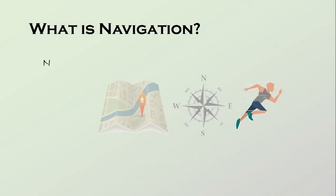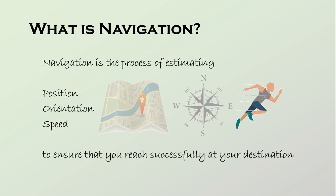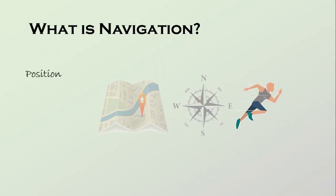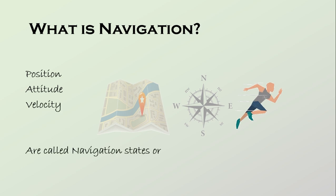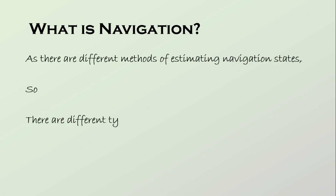Navigation is the process of estimating position, orientation, and speed to ensure that you reach successfully at your destination. Orientation can be referred to as attitude and speed as velocity. Position, attitude, and velocity are called navigation states or navigation solution. As there are different methods of estimating navigation states, there are different types of navigation.